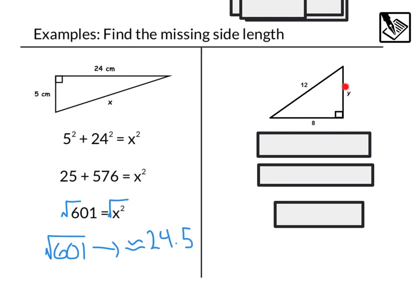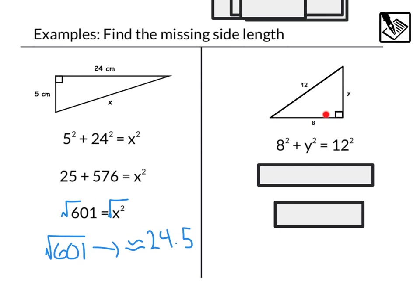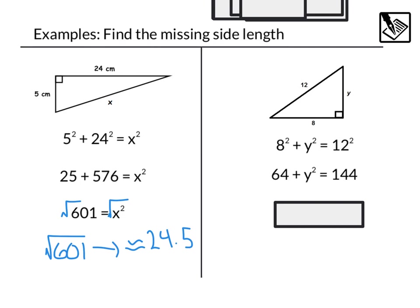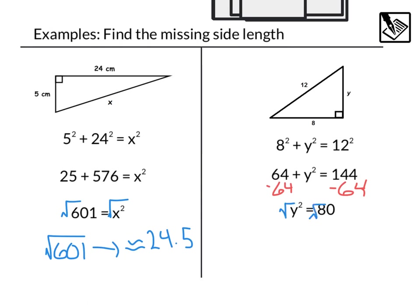In this next example, it looks like we have a missing side length that is a leg. That's okay, we can still set up the same equation: a squared plus b squared equals c squared, which would be 8 squared plus y squared equals 12 squared. Evaluating those squares leaves us with 64 plus y squared equals 144. We subtract 64 from both sides, giving us y squared equals 80. Taking the square root of both sides, we get y equals the square root of 80, which is approximately 8.9.